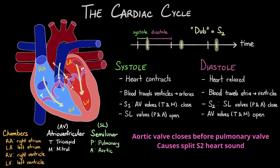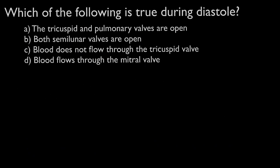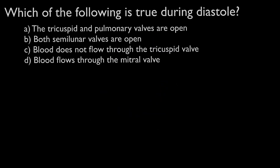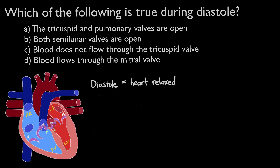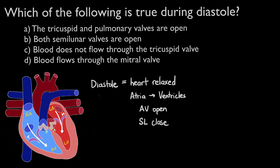Now, time for some questions to test your understanding. Which of the following is true during diastole? To answer this question, let's review what happens during diastole. Diastole is when the heart relaxes to allow blood to flow from the atria to the ventricles. This means that the atrioventricular valves would be open to let the blood flow through, and the semilunar valves would be closed to prevent blood from going back into the heart.